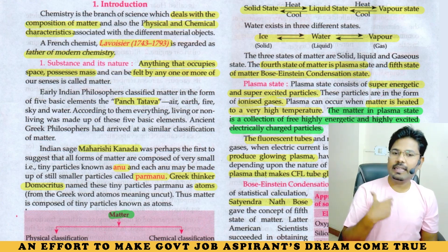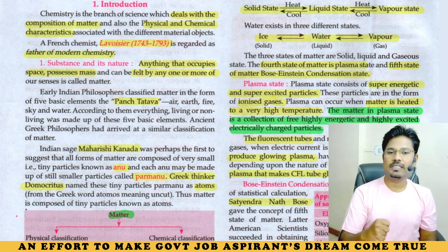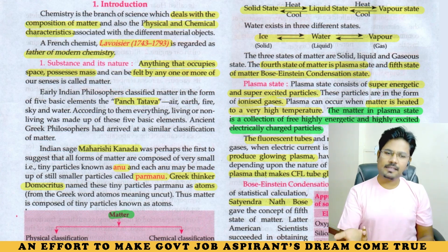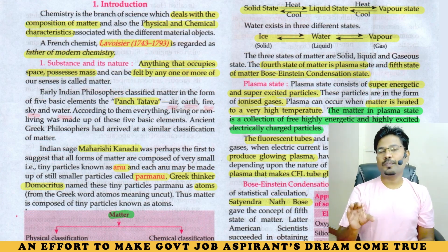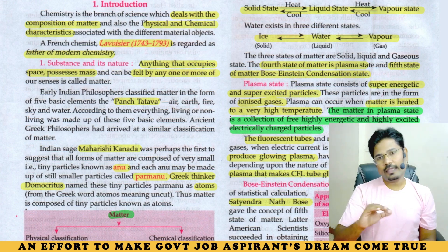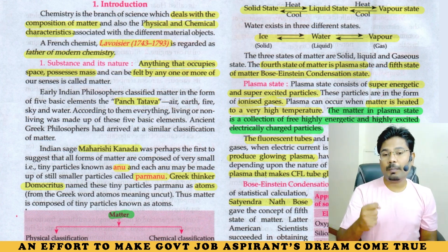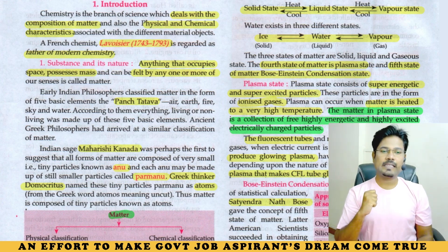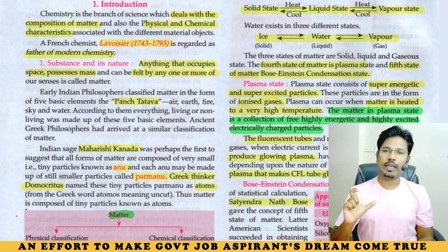This matter — our Indian philosophers described it as Pancha Tatva — five elements: Air, Earth, Fire, Sky, and Water. From these five elements, matter is formed. This can be living or non-living, made up of these five basic elements.